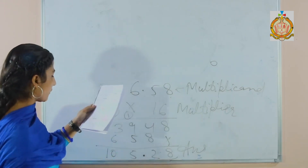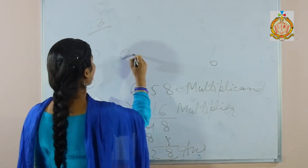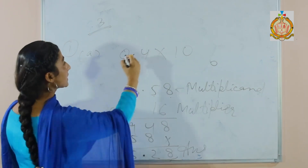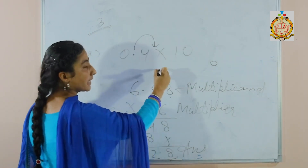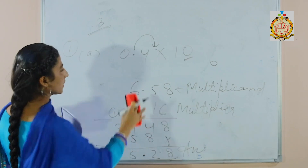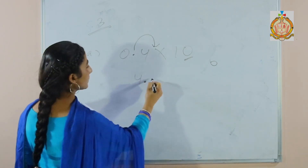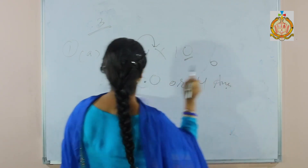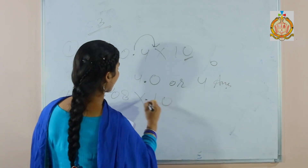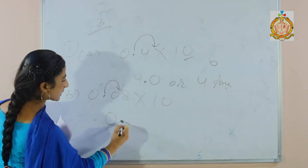Now let's start exercise 5.3, which is based on the multiplication of a decimal by 10, 100, and 1000. For example, multiplication of 0.4 by 10 — the decimal will be moved 1 place to the right because 10 has one zero. So the decimal point will be placed 1 place to the right and the answer will be 4, or you can write 4.0.